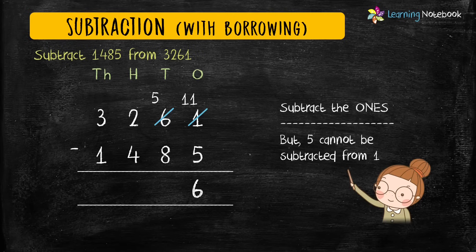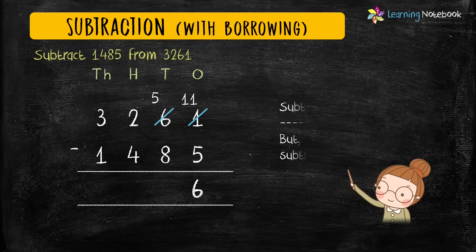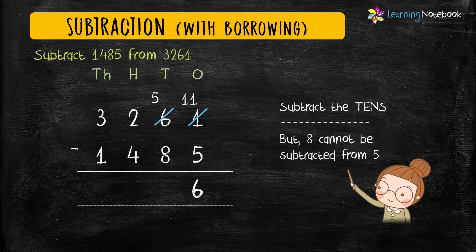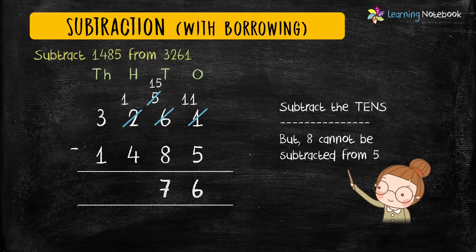Now let's move and subtract the digits at tens place. But again, 8 is bigger than 5, so 8 cannot be subtracted from 5. Let's borrow from hundreds place, so 2 becomes 1 and 5 becomes 15. Now we can subtract the digits at tens place: 15 minus 8 equals 7.